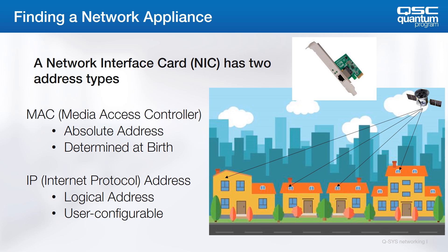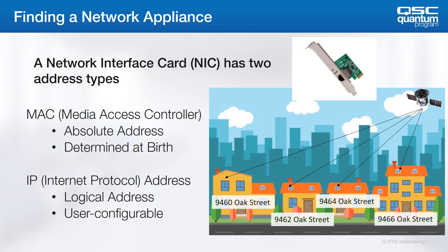The Internet Protocol, or IP address of a device, however, is configurable. It's a logical address, like the street address of our houses here on Oak Street. We could rename Oak Street to Elm Street, but the global coordinates of each house are still the same.